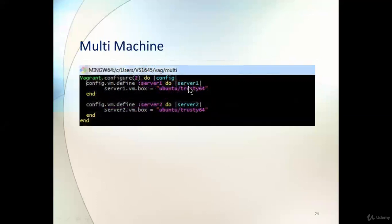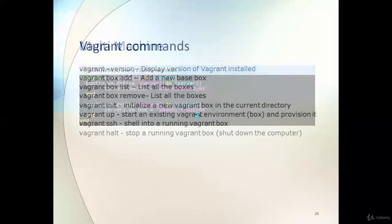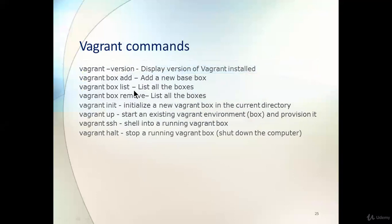If you need multiple virtual machines, you can define them with multiple variables. For three machines, write another block: `config.vm.define :server3 do |server3|`, then `server3.vm.box = "centos/7"` — it will install CentOS 7. The operating system can be different for each server, and this pattern scales to as many machines as needed.